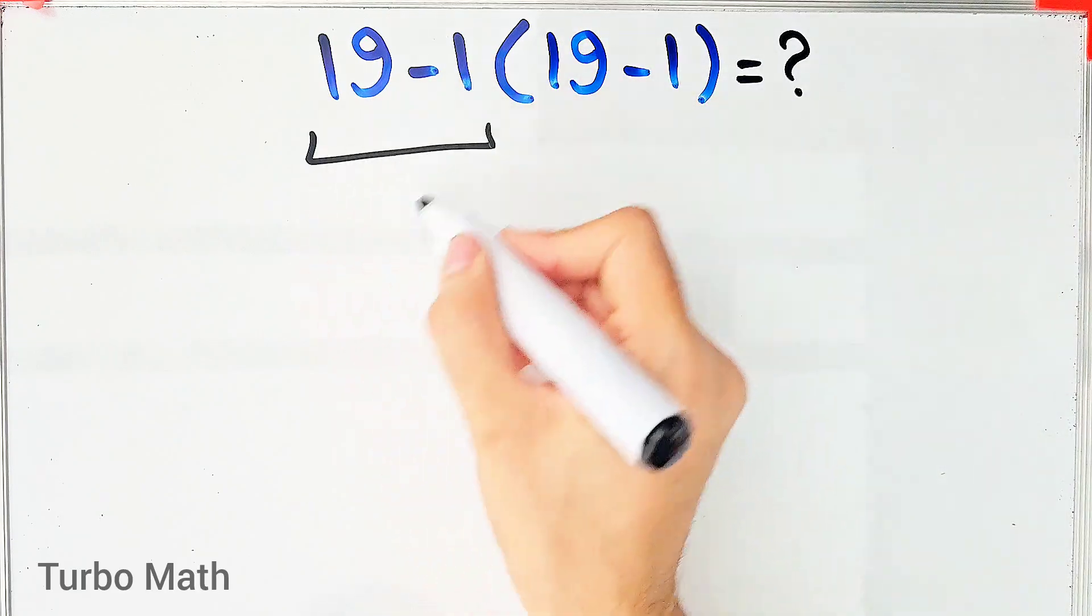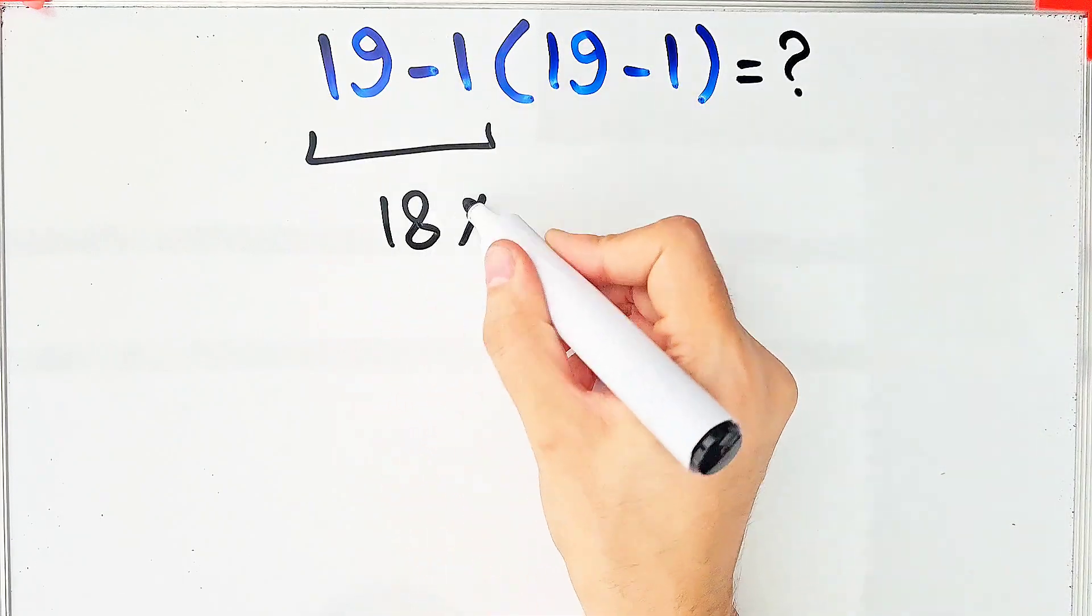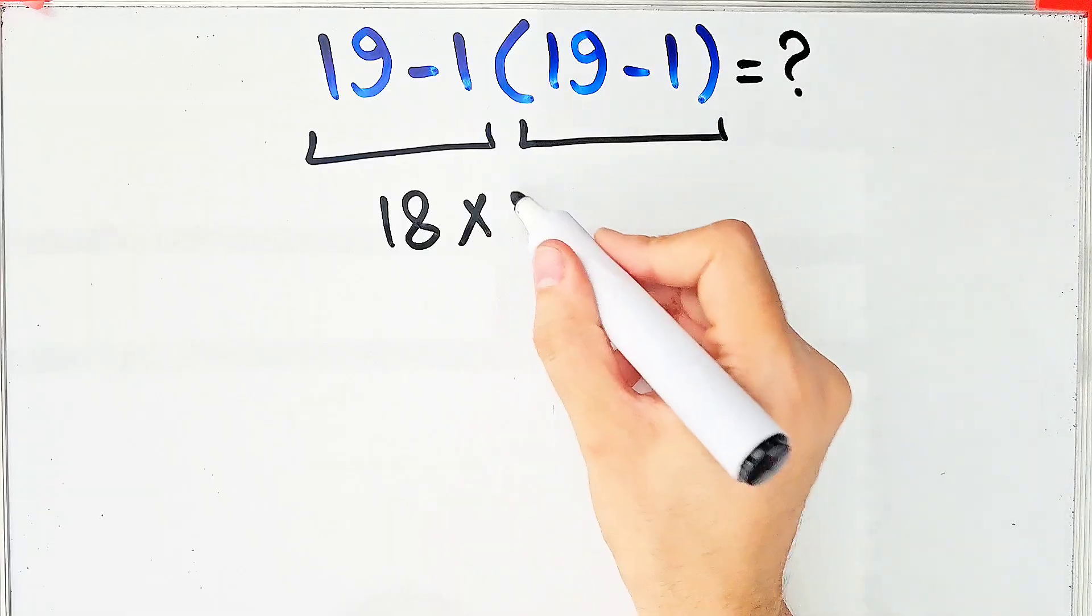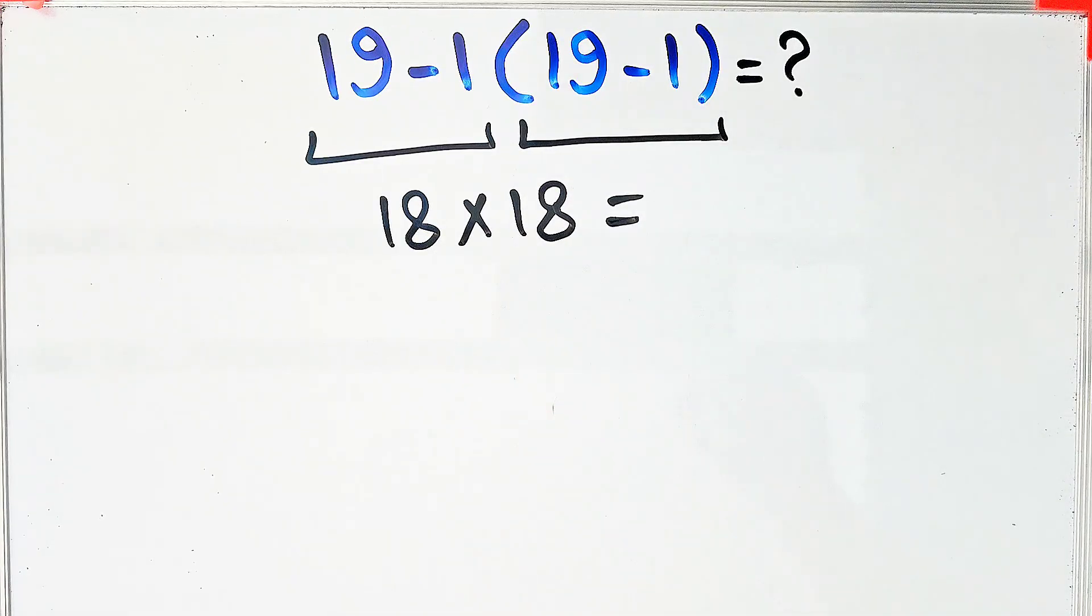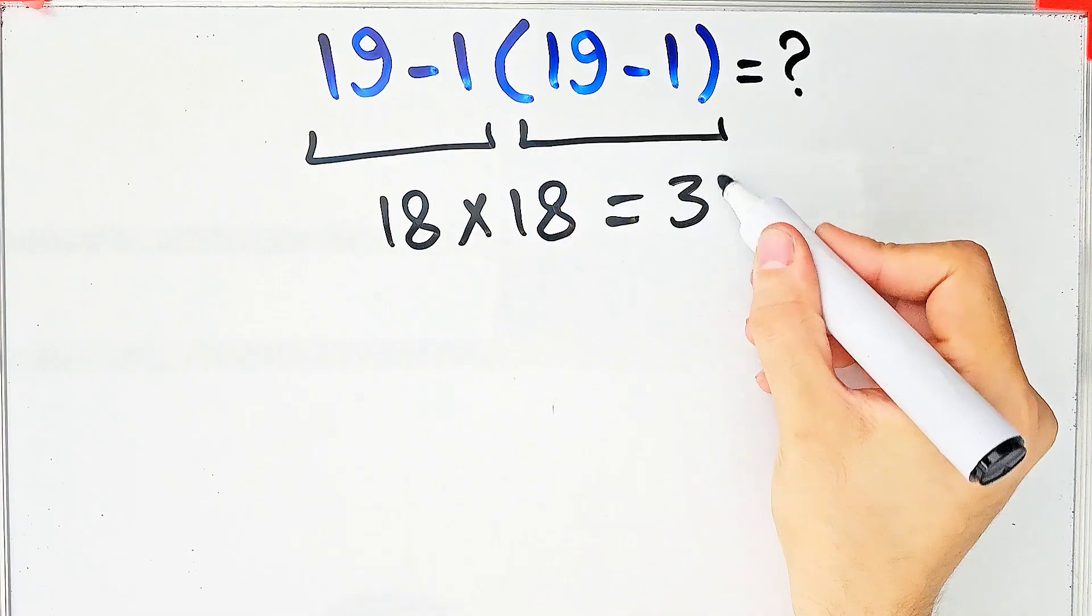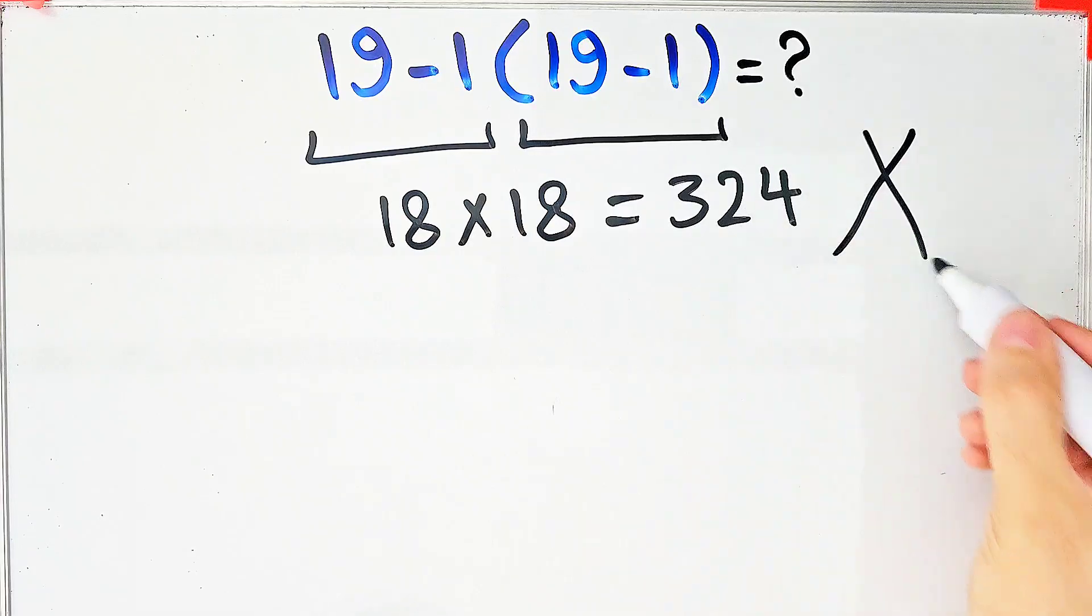19 minus 1 equals 18. 18 times 19 minus 1, which equals 18, and 18 times 18 equals 324. But this answer is definitely wrong.